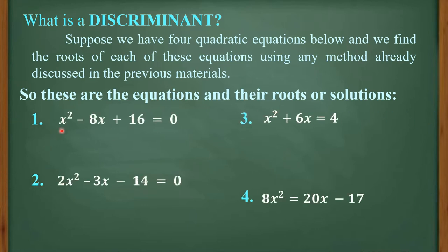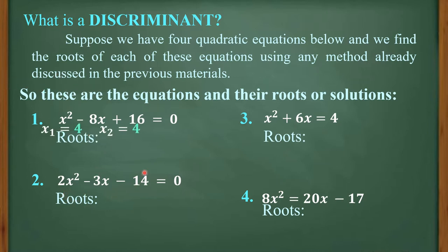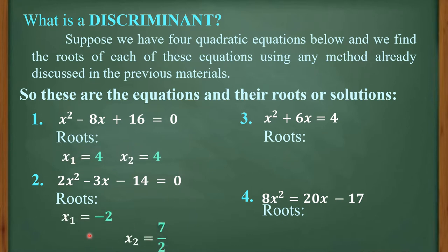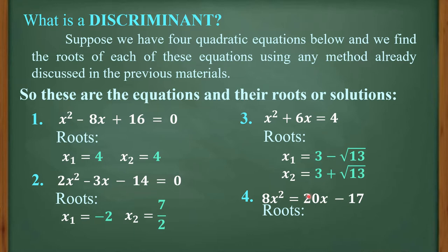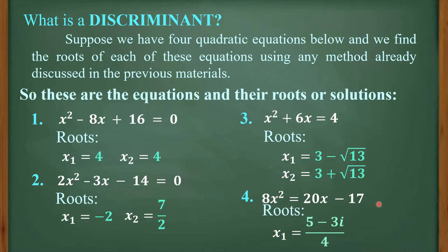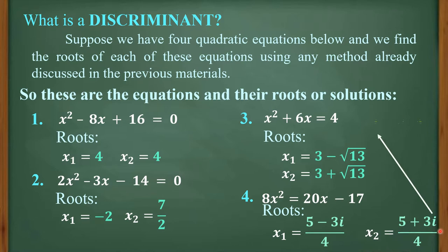Number 1: x squared minus 8x plus 16 is equal to 0. Number 2: 2x squared minus 3x minus 14 is equal to 0. The roots of number 1 are 4 and 4. The roots of number 2 are negative 2 and 7 halves. The roots of number 3 are 3 minus square root of 13 and 3 plus square root of 13. And the roots of number 4, 8x squared equals 20x minus 17, are 5 minus 3i all over 4, and 5 plus 3i all over 4.